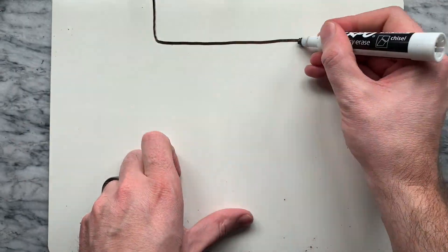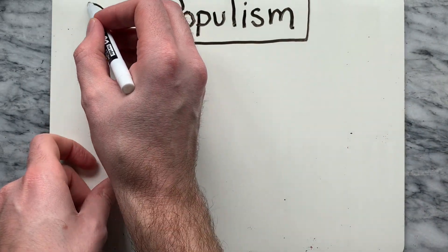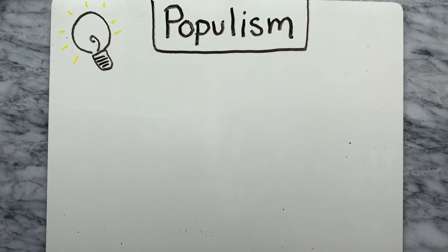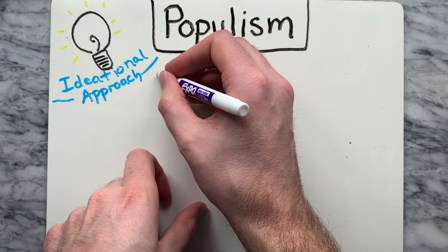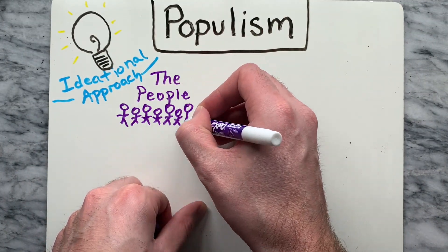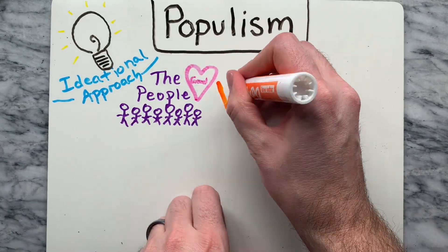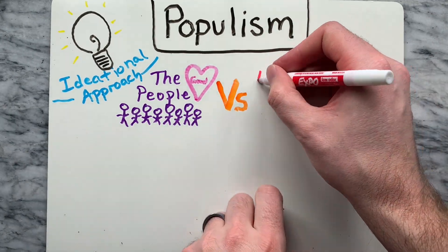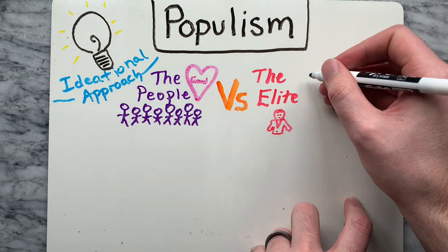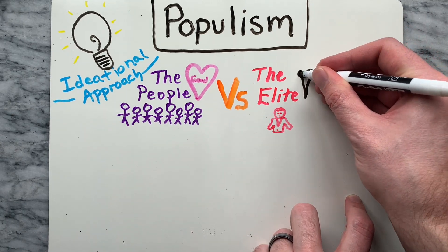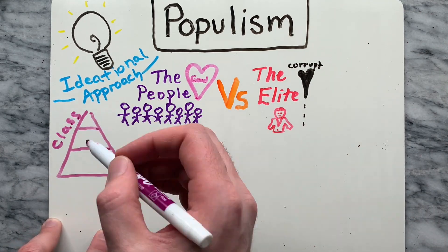Before we dive into the differences, let's talk about a common framework for interpreting populism, which is known as the ideational approach. This defines populism as an ideology which presents the people as a morally good force and contrasts them against the elite, who are portrayed as corrupt and self-serving. Populists differ in how the people are defined, but it can be based along class, ethnic, or national lines.